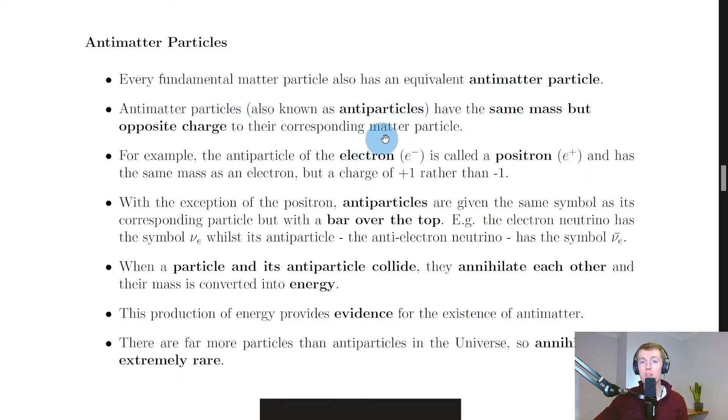So for example, the antiparticle of the electron is called a positron and has the same mass as an electron, so that would be 9.11 times 10 to the minus 31 kilograms, which is on your data sheet, but it's got a charge of plus 1e rather than minus 1e, where e is the magnitude of the charge on the electron.